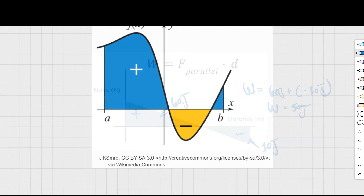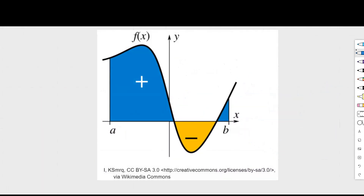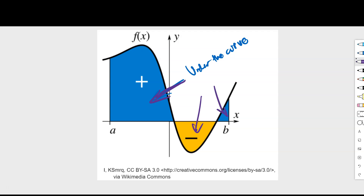Now I believe you understand enough to look at a more complex diagram combining a lot of what we've discussed — you have positive and negative values for areas under the curve. Under the curve literally means between the function line, this f(x) line, and the middle axis line. Above the middle axis is positive, below the middle axis is negative, and you can sum those values. Graphically, that is what an integral is: an integral is the area under the curve for some function.